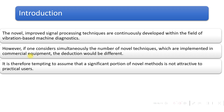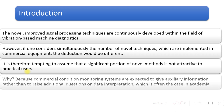Commercial equipment refers to industry-standard equipment — for example, National Instruments manufactures data acquisition devices which are commercial industry standards. It is therefore tempting to assume that a significant portion of novel methods is not attractive to practical users, because they are very good for theoretical research but not so suitable for practical applications.